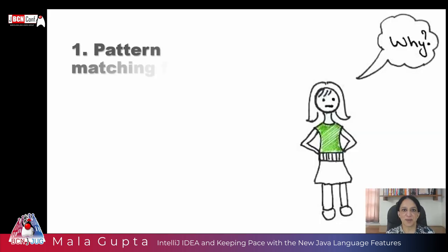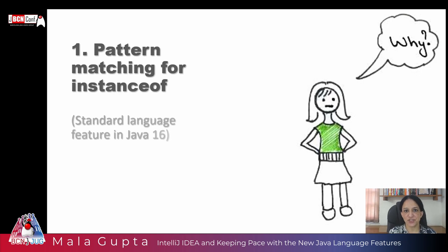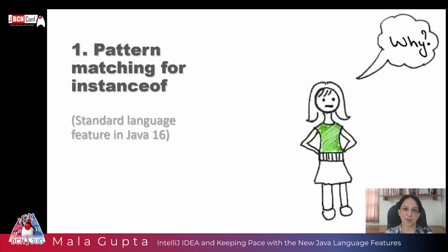Let me start with pattern matching for instanceof, which applies pattern matching to the instanceof operator. This feature was added to Java 16 as a standard language feature, which means you can use it in your production code — there are no more changes planned for this feature. There is more pattern matching in Java 17 with switch statements and expressions, and Java 18, which talks about record patterns and array patterns.